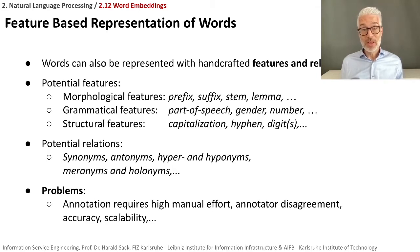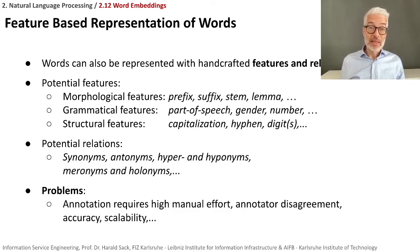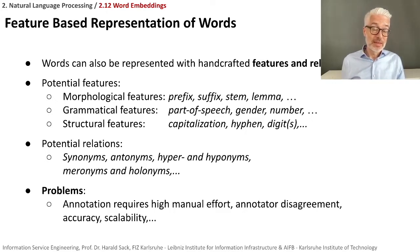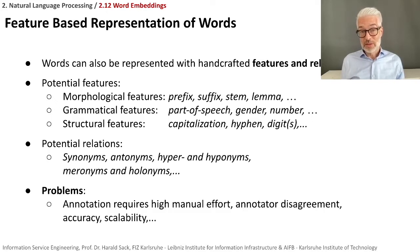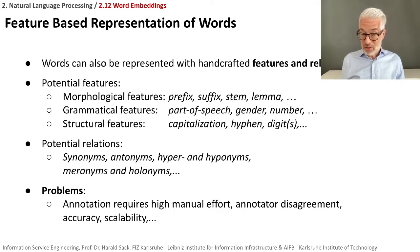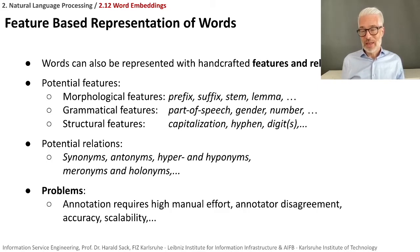The problem with feature-based representation is that annotating or determining all these features for individual words usually requires high manual effort. With many annotators, there may be annotator disagreement to deal with. There are also issues of accuracy and scalability, and it's not easy to determine how important a given feature is for a specific task. However, with modern machine learning and network architectures like convolutional neural networks, much of this feature engineering can be learned by the machine — which we will see in chapter four.